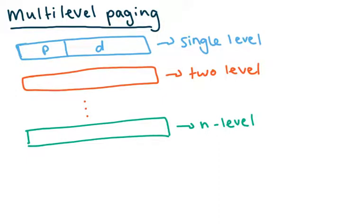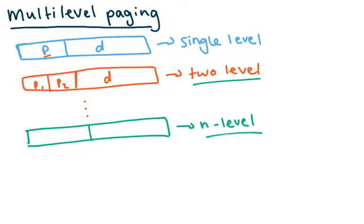Instead of having a single page table, we're going to have multiple page tables. In the address, instead of having just one 'p' that indexes into one page table, we're going to spread this out into maybe p1, p2, and so on. This is a two-level page table, but it can be n-level — we could split into p1, p2, all the way up to p-of-n — and the offset d remains the same.